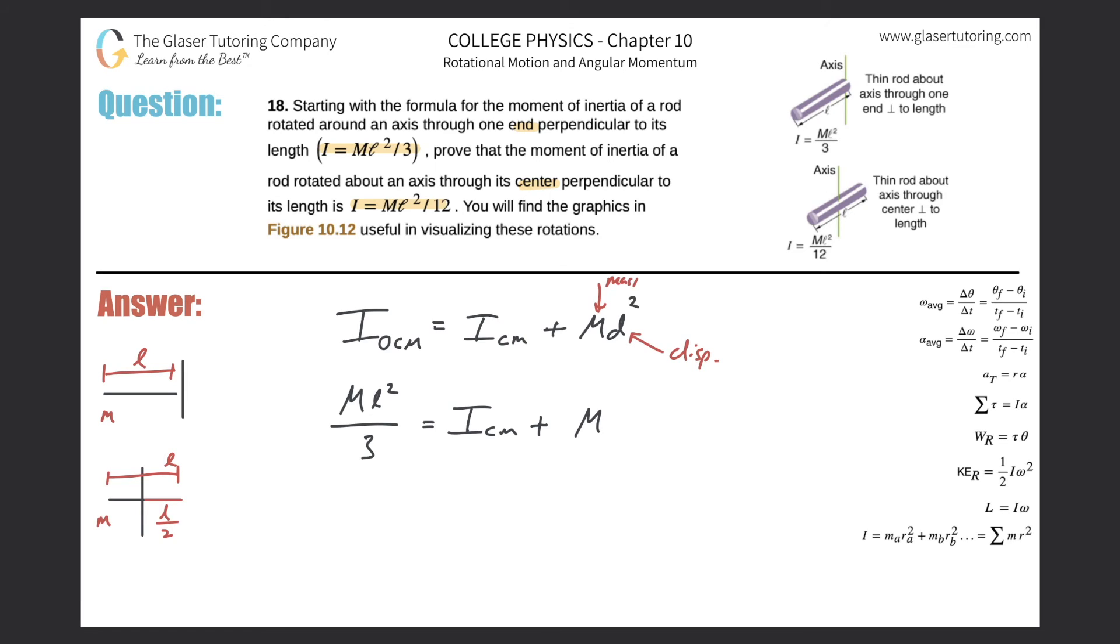So when I plug in now my value for D, it's going to be L over two, and that whole thing is squared.